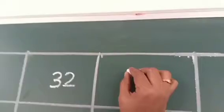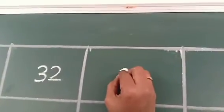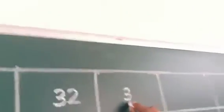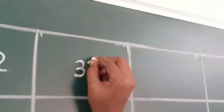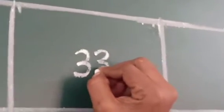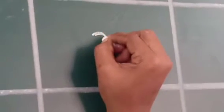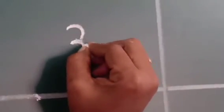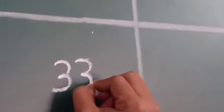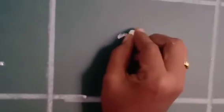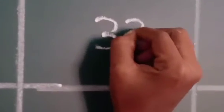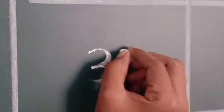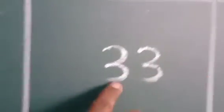Thirty-three. How to write number 33? Left curve and again one left curve — that is three. And near one three — again left curve and one left curve. Thirty-three. Write slowly. Thirty-three. What is the number? Thirty-three. Say the number: 33. Very good. And after 33, what comes?